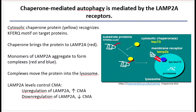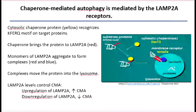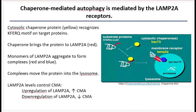Lysosomal degradation occurs through chaperone-mediated autophagy. The term autophagy refers to the body's way of degrading its own tissues for use in energy production during starvation and other low-energy metabolic circumstances. Chaperone-mediated autophagy, or CMA, is mediated by a specific receptor found on the surface of the lysosome. This specific type of protein degradation is happening in the liver. Another really important role for the liver is protein degradation through CMA.